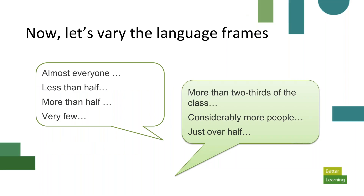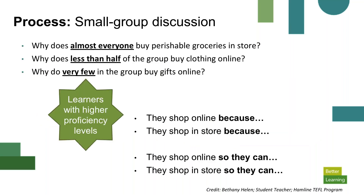Language frames are a great support for all learners, but we can vary the level of the frames themselves. We could give almost everyone 'less than half, more than half, very few.' However, there might be students ready for more complex phrases: 'more than two-thirds of the class,' 'considerably more people,' 'just over half.' While some students in the group were doing guided practice using language frames to access the text, students with higher proficiency could be working on a small group discussion at the same time. That's the idea of differentiating the complexity of tasks in our classes.